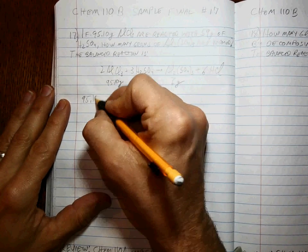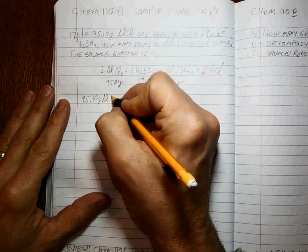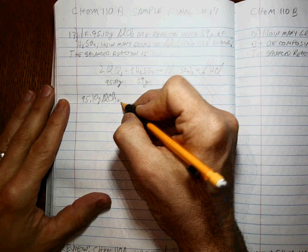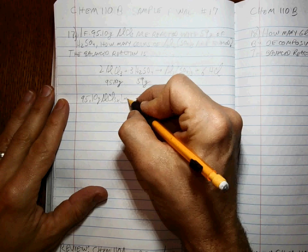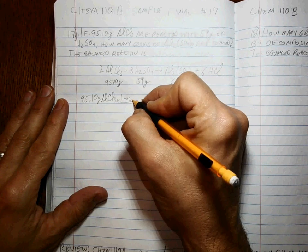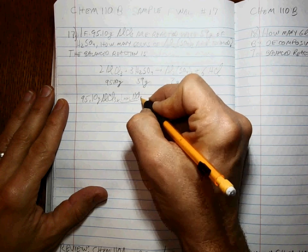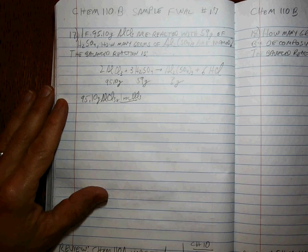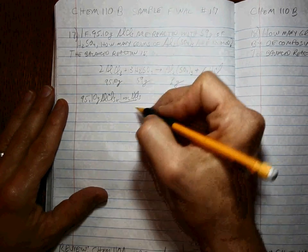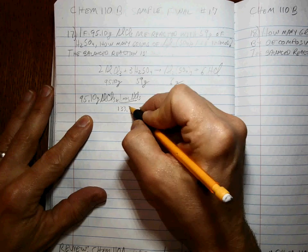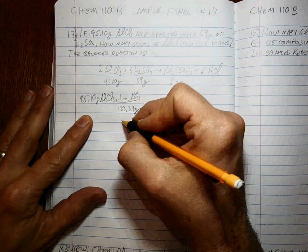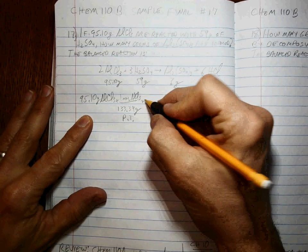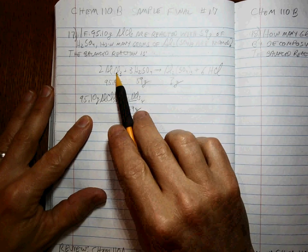95.10 grams of the aluminum chloride. Convert to moles first. That's using the periodic table. And you look up aluminum chloride, that's 133.34 grams from the periodic table. Once we're there, that's the moles.